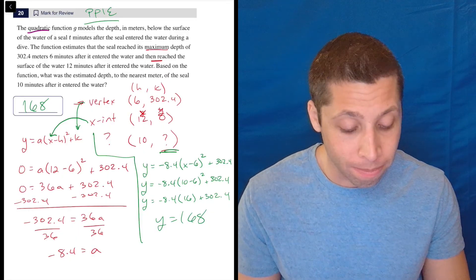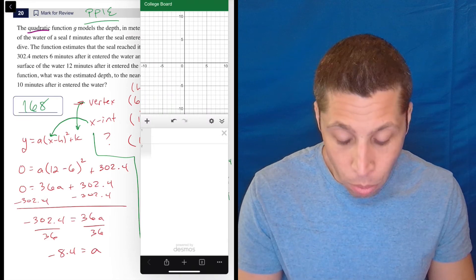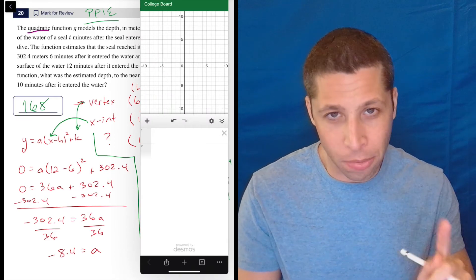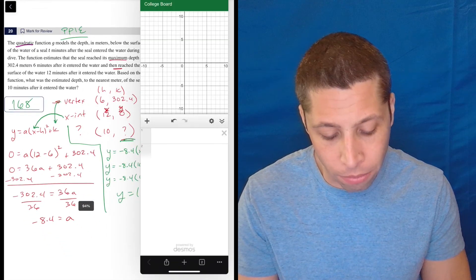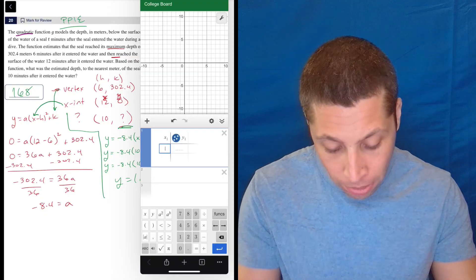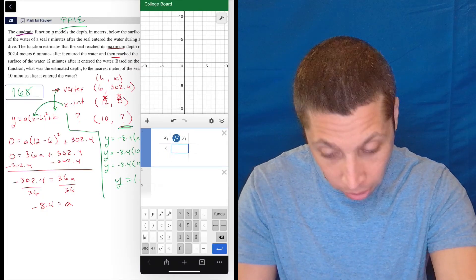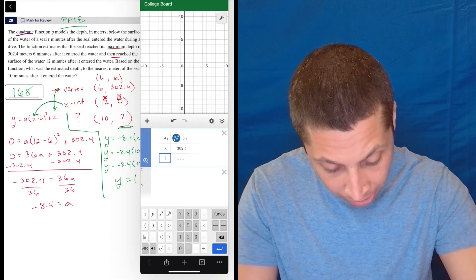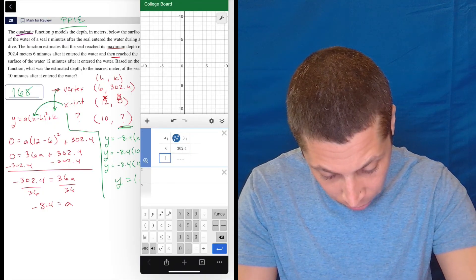I think we also could do the regression in Desmos. Remember, if you have in most quadratic cases, if you have two points, you're good to go. You can find the entire equation. So let me show you how we would do that. We have to hit this plus and get a table. And then you just type in the points that you have. So 6, 302.4 and what was the other one? 12, 0.